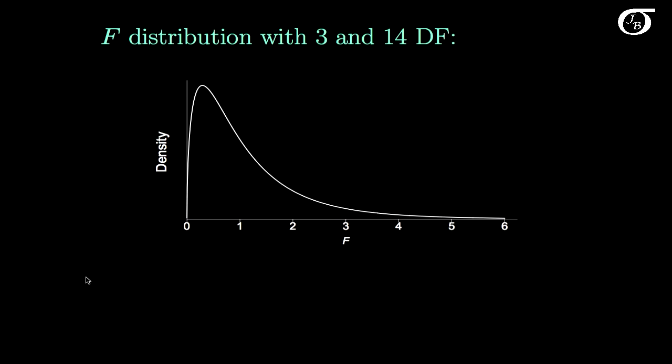And suppose for the sake of illustration that we're interested in the probability that a random variable F that has this distribution takes on a value that is greater than 2.448. Well, it is a continuous probability distribution, so we are simply looking for the area to the right of 2.448 under this curve.